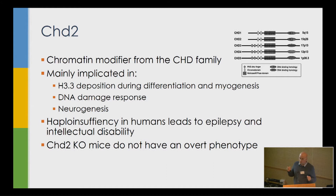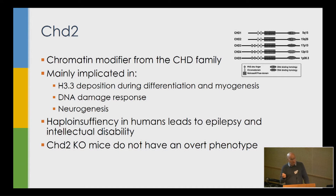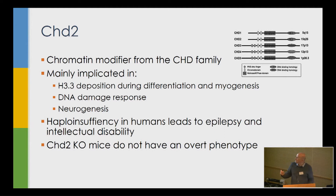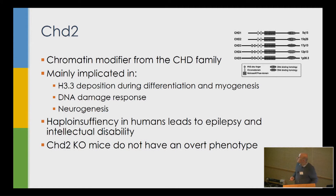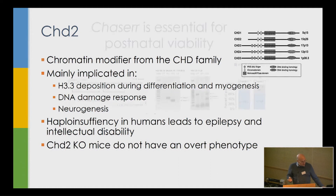There are reports implicating CHD2 in development. Haploinsufficiency — loss of a single copy — is sufficient to cause epilepsy and autism in humans, a rare but highly penetrant form. It is also mutated in CLL. Importantly, knockout mice lacking CHD2 do not have an overt phenotype. Some earlier reports based on gene traps suggested knockout was embryonic lethal, but more recent knockouts, including ones we made, show these mice live quite fine.